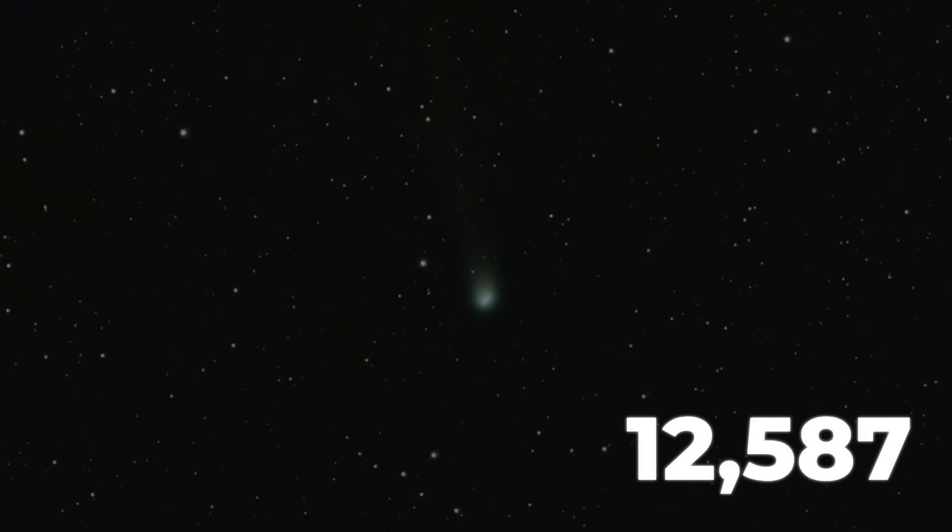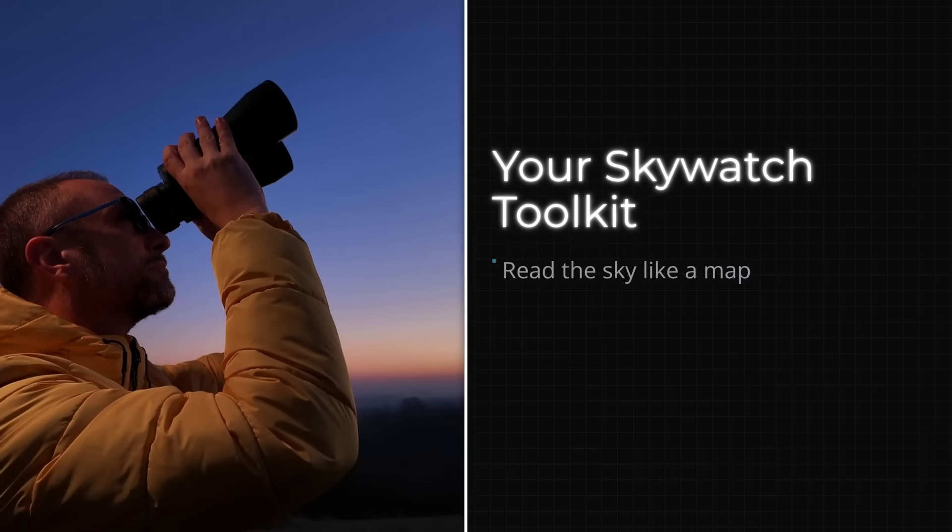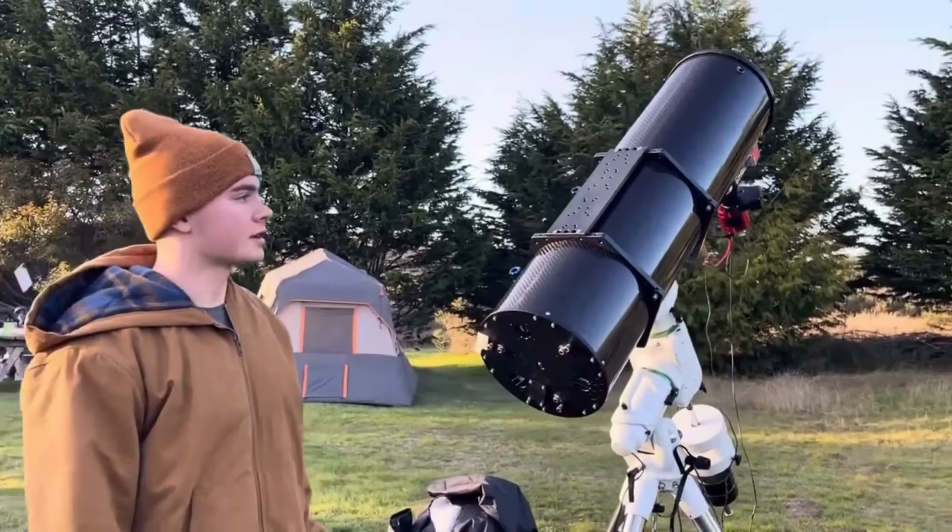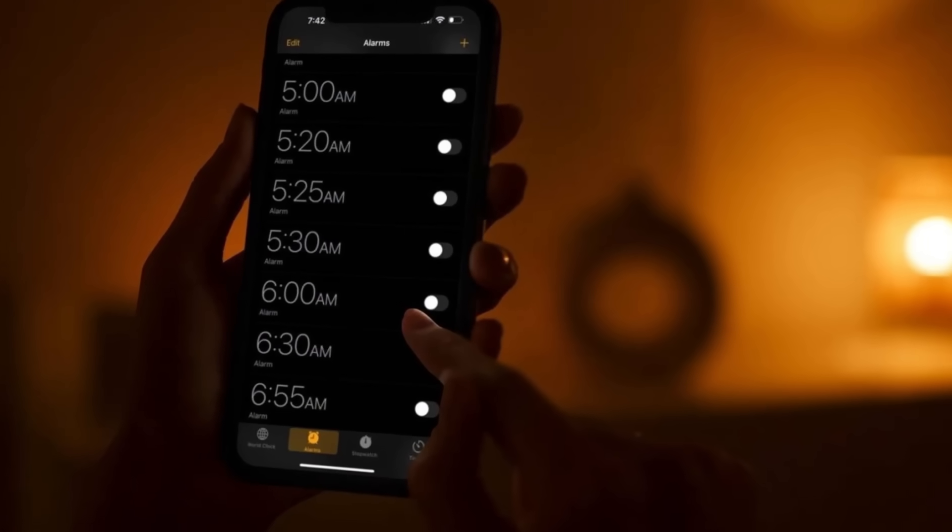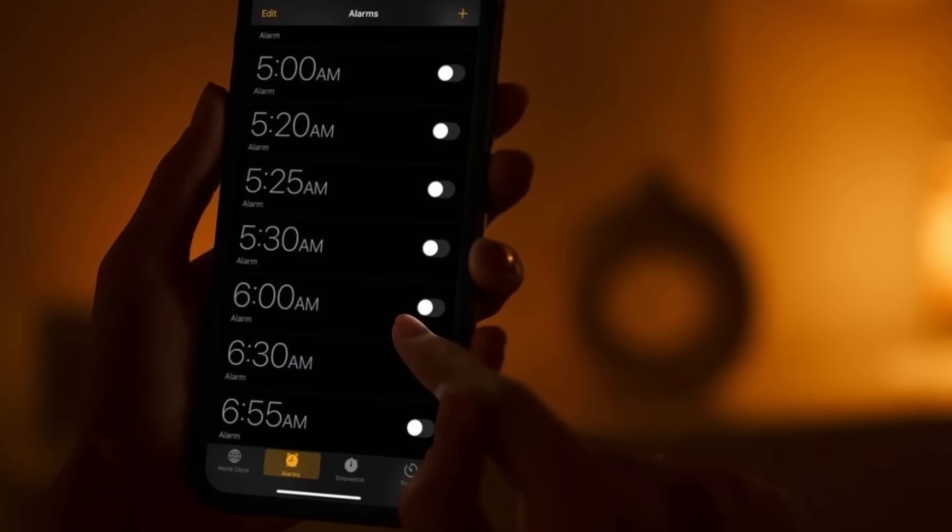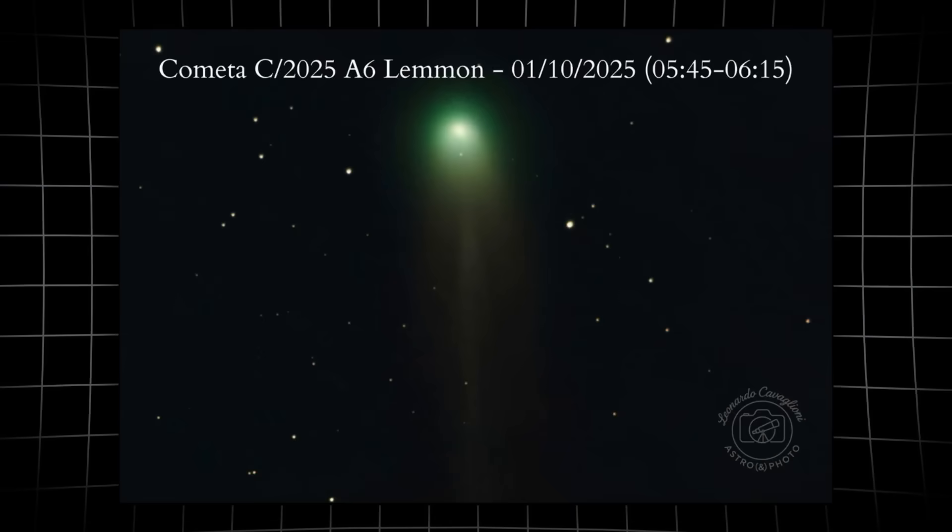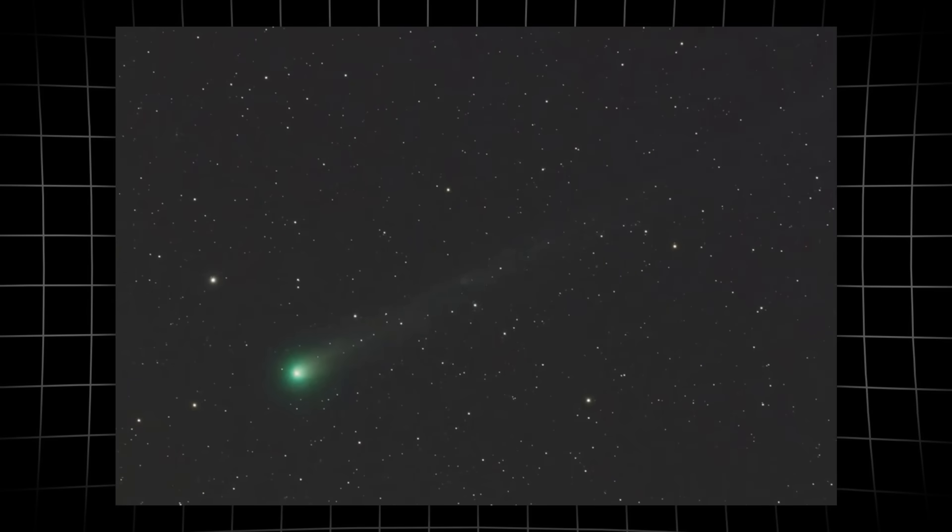Every observation, whether it's a quick glance or a carefully logged brightness estimate, adds to the global record. The skills you build now, reading the sky, tracking a moving target, knowing when to look, will serve you well when the next comet or interstellar object appears. For now, the instructions are simple. Set your alarm, grab your binoculars, and look east. The solar system is putting on a show, and the ticket is free.